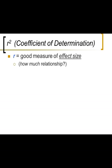So let's talk about R squared. Sometimes called the coefficient of determination. Usually called R squared. This is a good measure of effect size. In other words, how much of a relationship is there? Now the question of how much of a relationship is a totally separate issue of whether it's statistically significant or whether it really describes the relationship you're looking at.